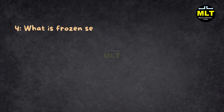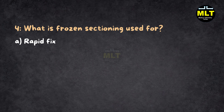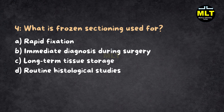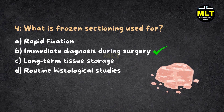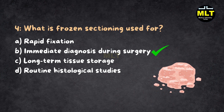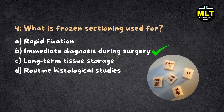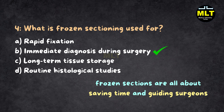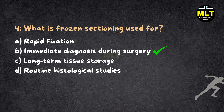Question 4: What is frozen sectioning used for? Options: A. Rapid fixation, B. Immediate diagnosis during surgery, C. Long-term tissue storage, D. Routine histological studies. Correct answer: B. Immediate diagnosis during surgery. Explanation: Frozen sectioning is the speedster of histopathology, providing quick answers during surgeries. Long-term storage and routine studies use paraffin-processed tissues, and fixation prepares them. Frozen sections are all about saving time and guiding surgeons — think of it as the fast food of histopathology.